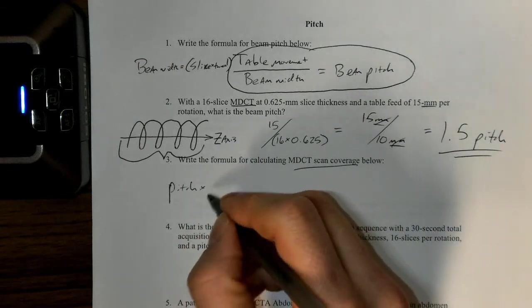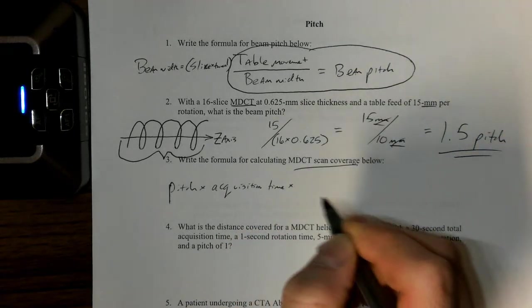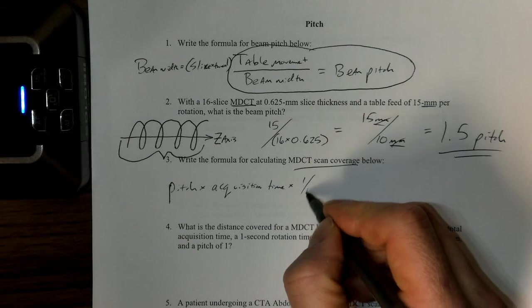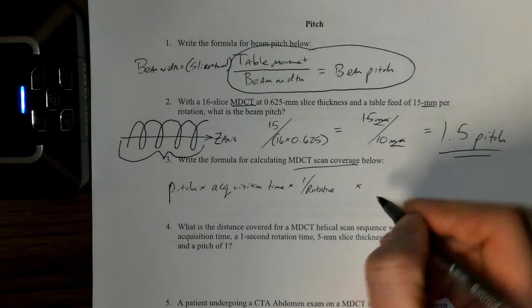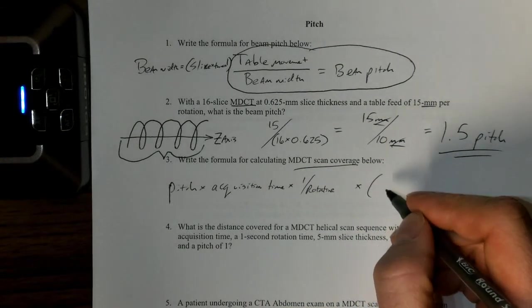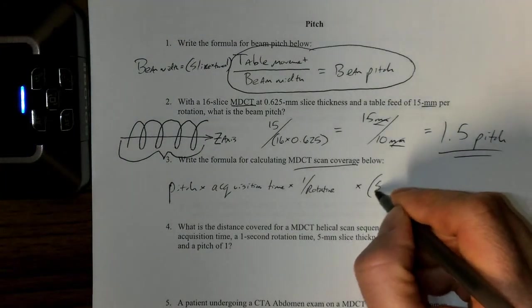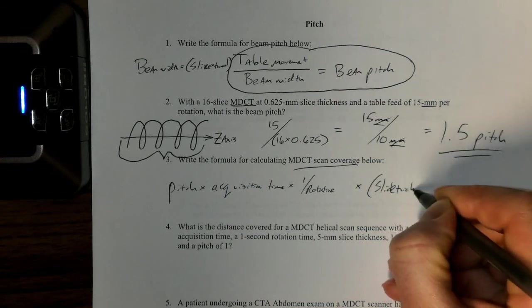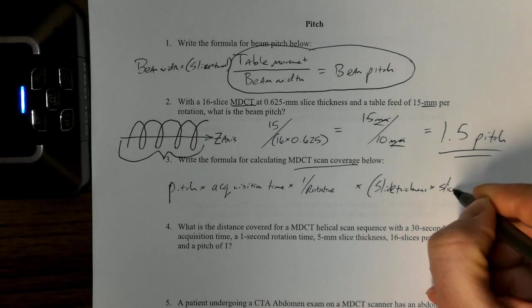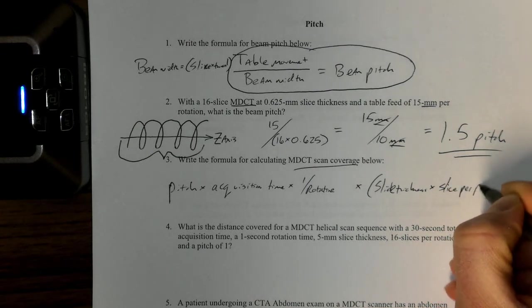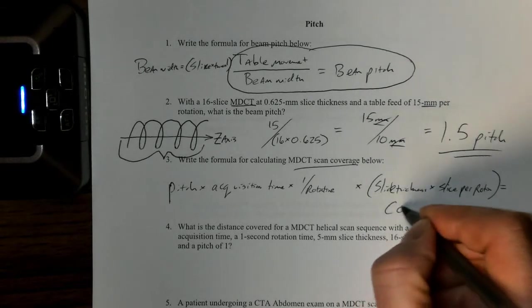We need to calculate the pitch if we don't know it, acquisition time, and the machine will tell you what the pitch is at the control console. We're going to do one over rotation time in case we're doing a rotation time that's shorter than one second. Then we're going to figure out the beam width, which is again slice thickness times slice per rotation.